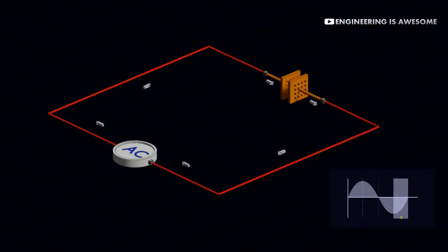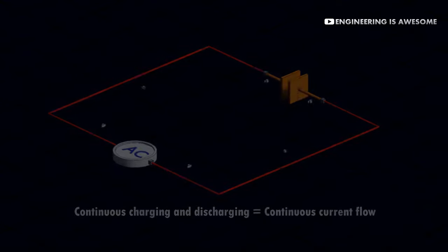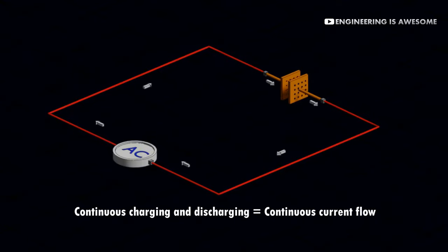And again, these stored charges will be released. So with an AC power supply, a capacitor constantly charges and discharges. And because of this, there is a constant oscillation of charges between its plates. So a capacitor with an AC power supply will have charges oscillating between its plates, and this constitutes a current flow.